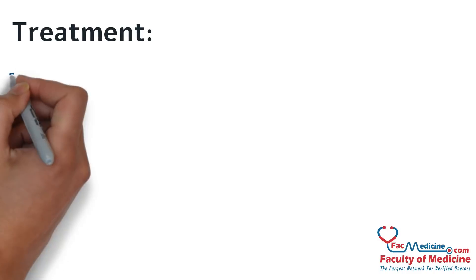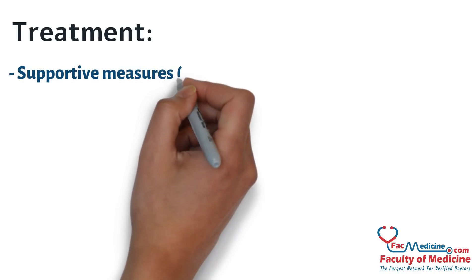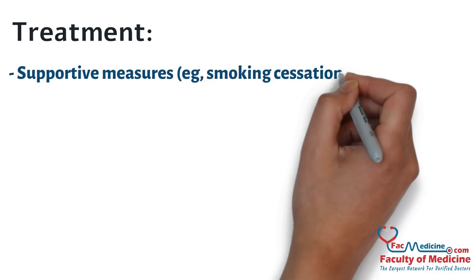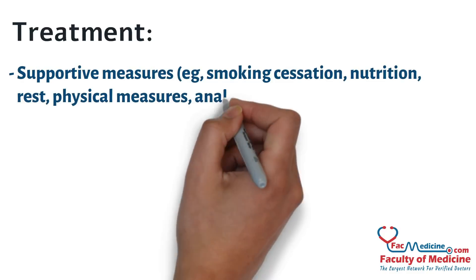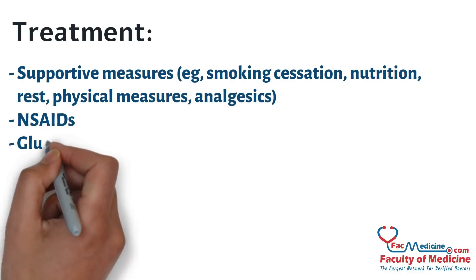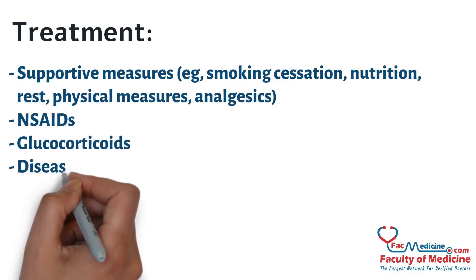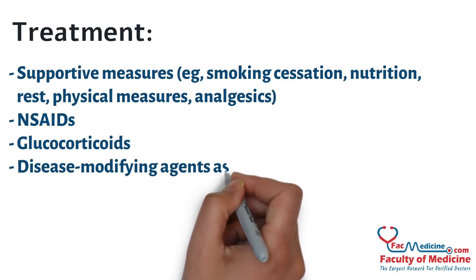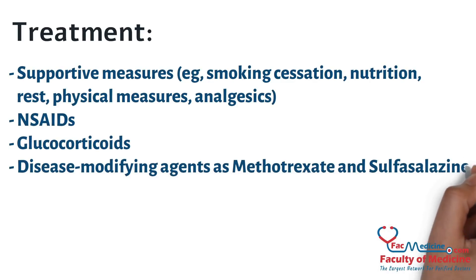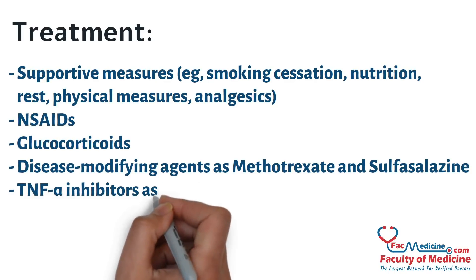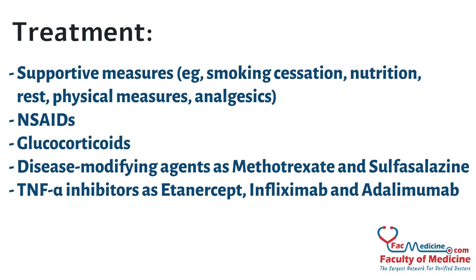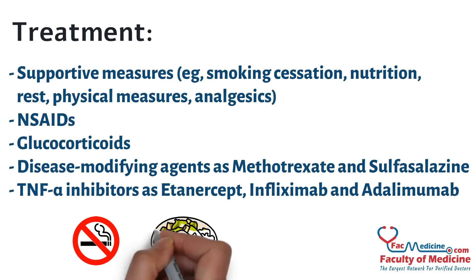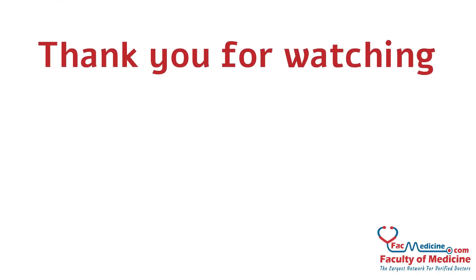Treatment: Supportive measures include smoking cessation, nutrition, rest, and physical measures. Medications include analgesics, NSAIDs, glucocorticoids, and disease-modifying agents such as methotrexate and sulfasalazine. TNF-alpha inhibitors include etanercept, infliximab, and adalimumab.